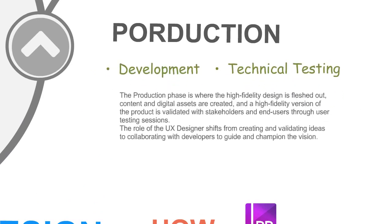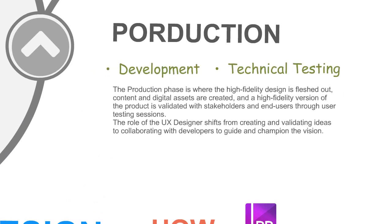The production phase is where the high fidelity design is fleshed out, content and digital assets are created, and a high fidelity version of the product is validated with stakeholders and end users through user testing sessions. The role of the UX designer shifts from creating and validating ideas to collaborating with developers to guide and champion decisions.